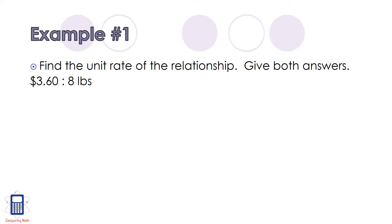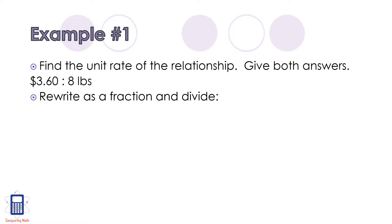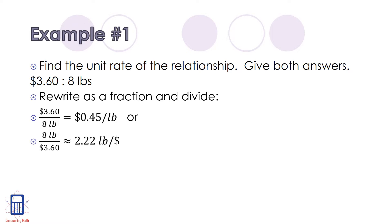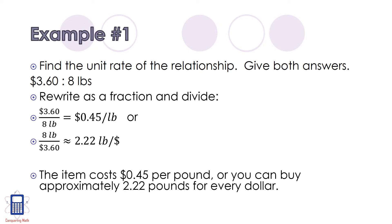Our job in the first example is to find the unit rate of the relationship — we'll have to give both answers. In this case we have $3.60 to 8 pounds. The first thing we need to do is rewrite as a fraction and divide. $3.60 divided by 8 pounds is 45 cents per pound. The other option is to do 8 pounds divided by $3.60, and we find that we can buy 2.22 pounds for every $1.00. So the item costs 45 cents per pound, or you can buy approximately 2.22 pounds for every dollar.